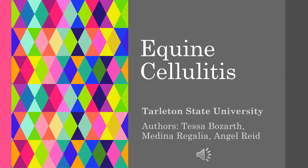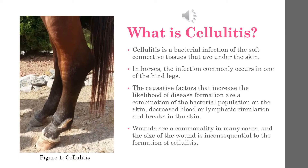Equine cellulitis, presented for Tarleton State University Equine Emergency and Critical Care, authored by Tessa Bozarth, Medina Regalia, and Angel Reed. Cellulitis, also sometimes called septic cellulitis, can happen anywhere in the body, but in horses the most common site of infection is in the hind limbs. Causes may vary, but in general wounds are the common factor in most cases, and wound size is completely independent of the formation of this disease.